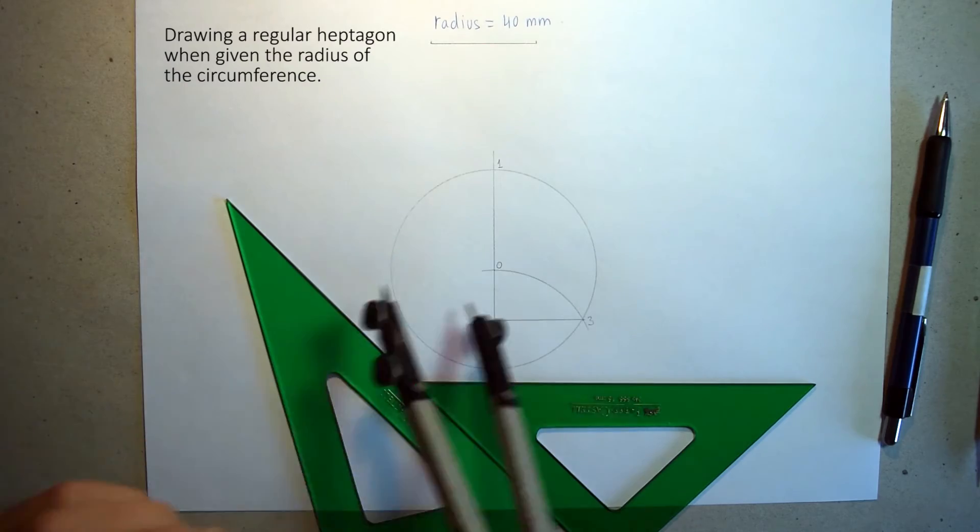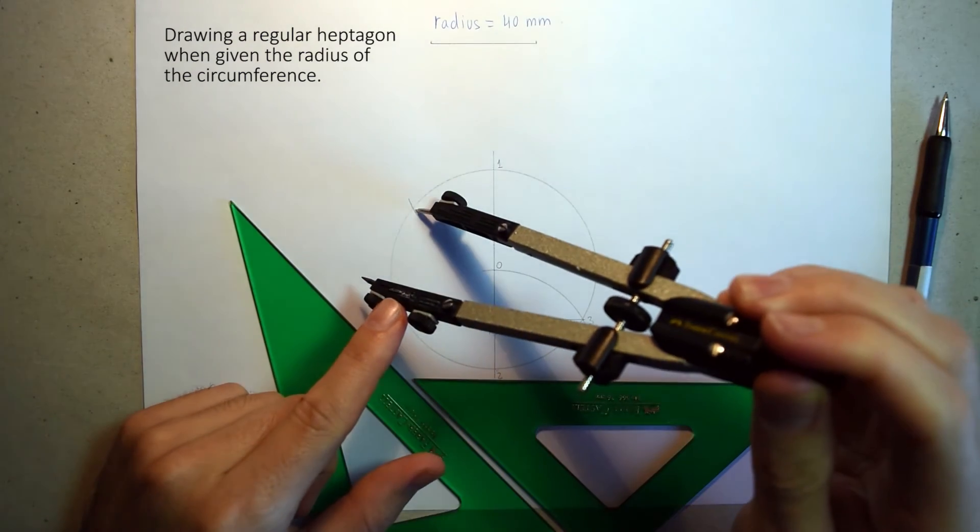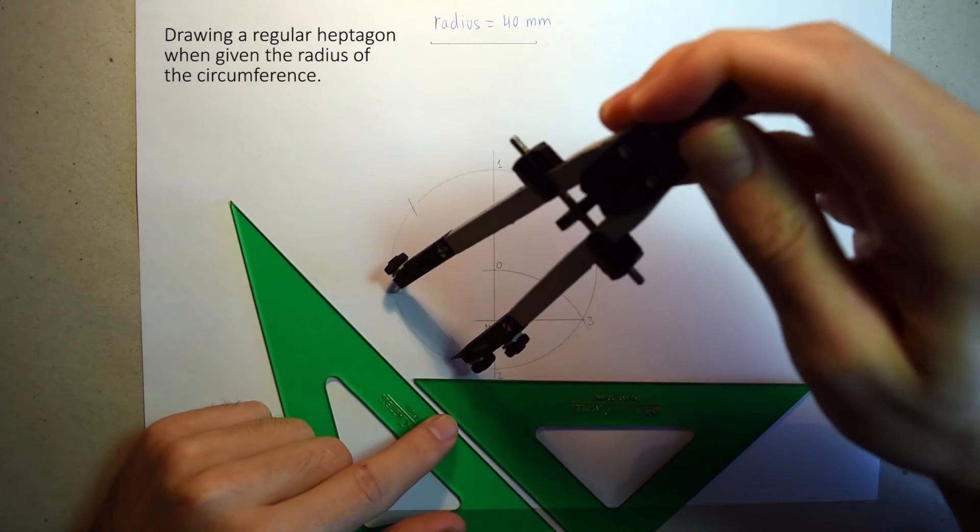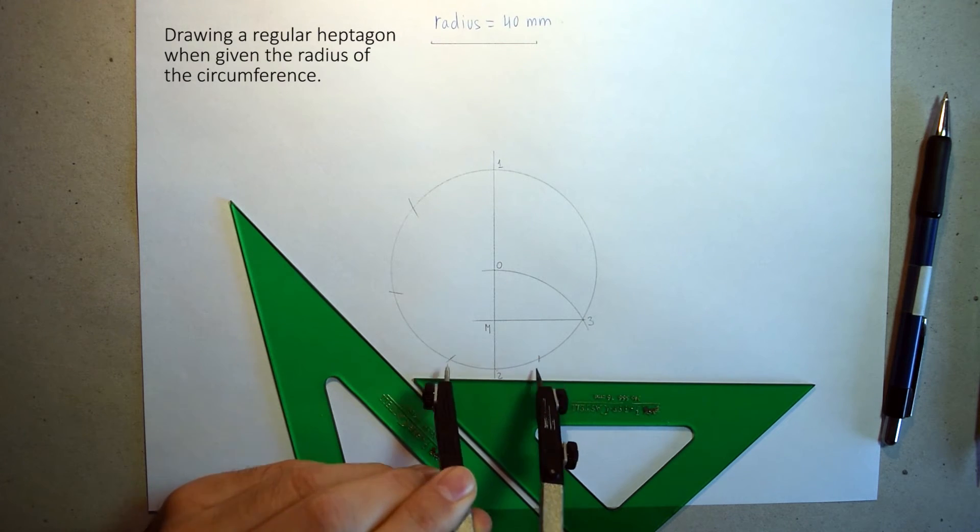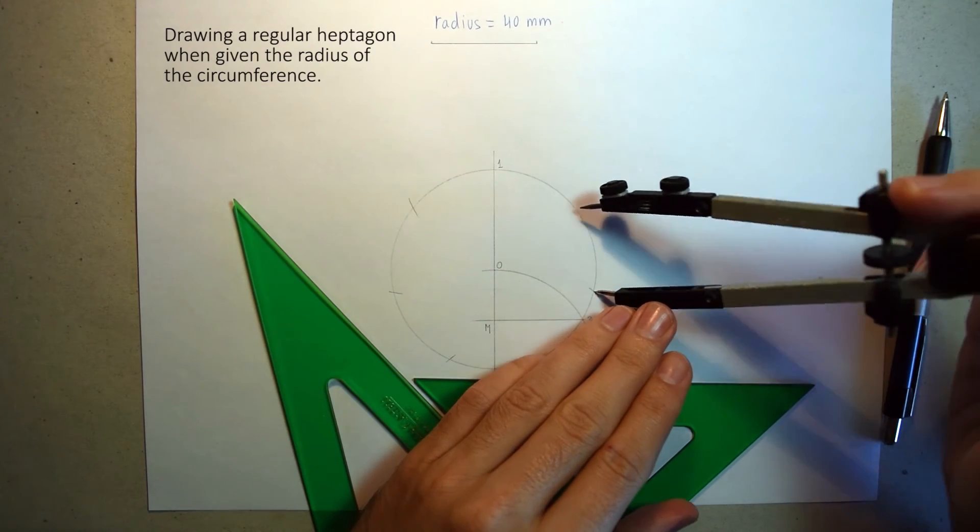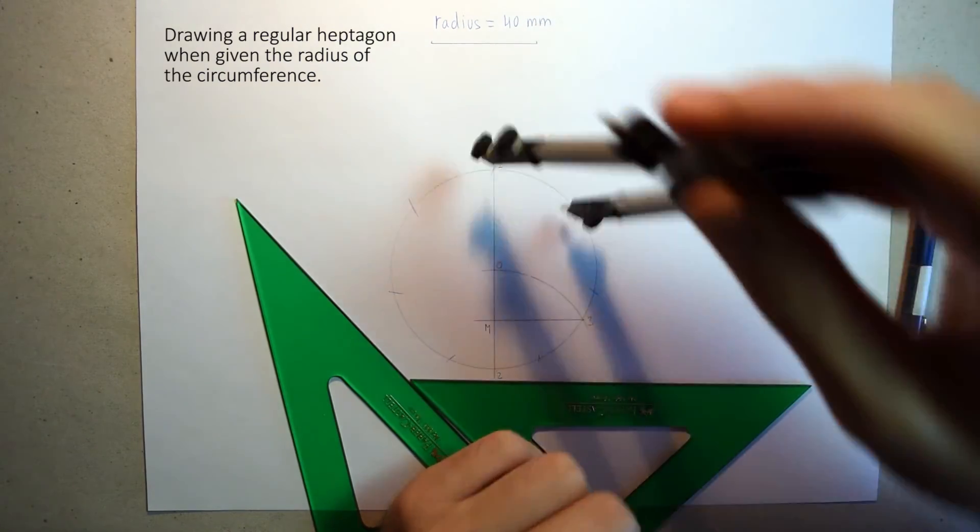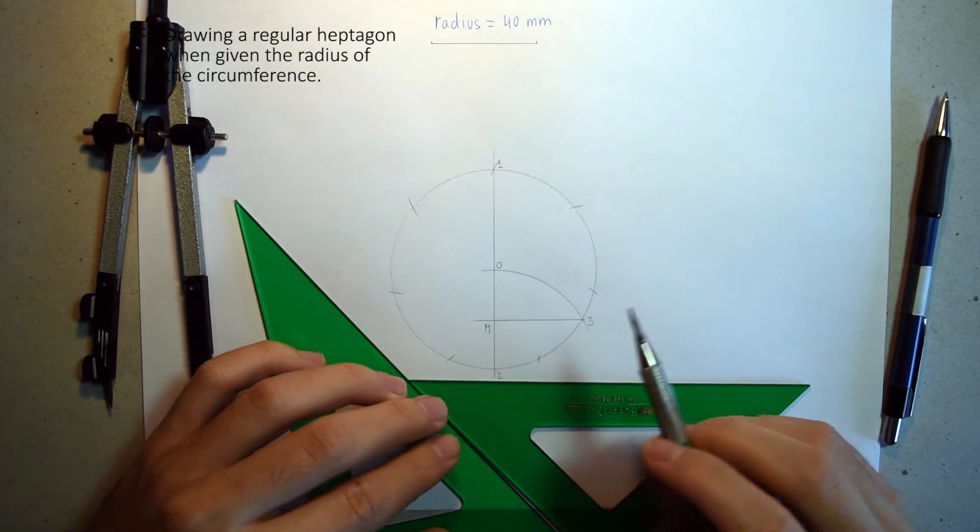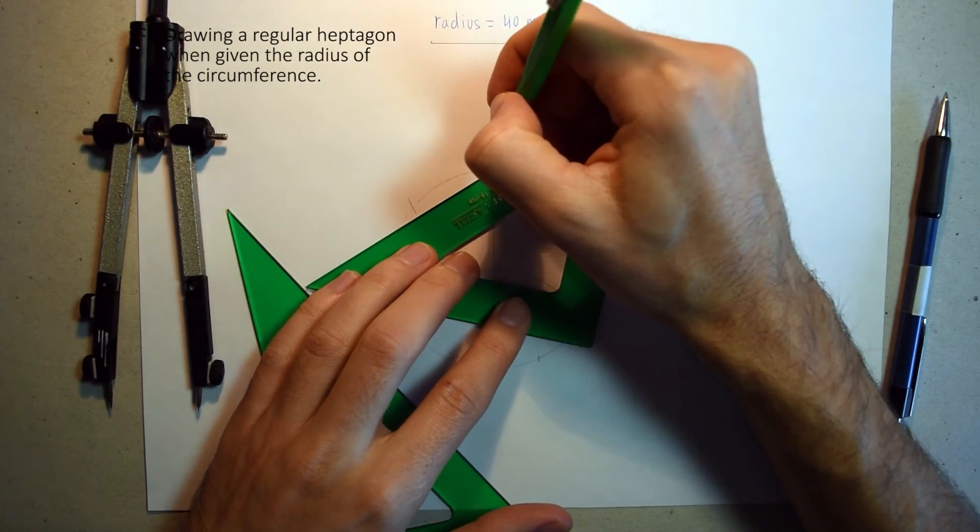You can check it by transferring this segment along the circumference. We transfer it seven times: one, two, three, four, five, six, and seven. If you work with precision, you will get an exact solution like this one. Now we have the vertices.